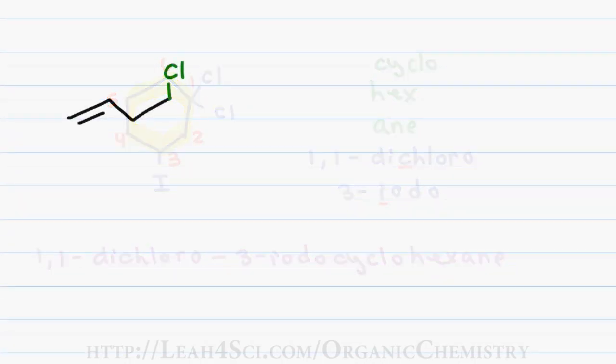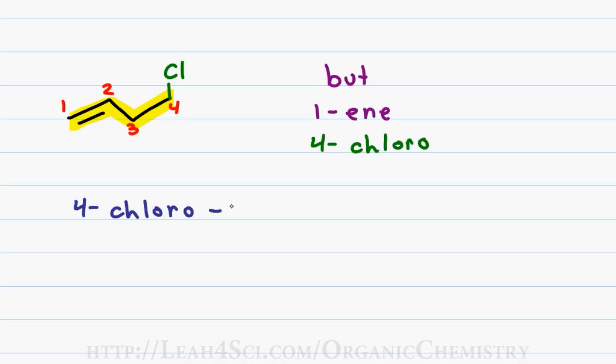When a pi bond and a halogen compete for priority, the pi bond is going to get the lower number. In this case, I highlight my parent chain and start numbering from the left since the double bond is higher priority than the chlorine. I have 4 carbons for a first name of bute, a pi bond starting at carbon 1 for a last name of 1-ene. Since chlorine occurs at carbon 4, we have 4-chloro for a final name of 4-chloro-1-butene.